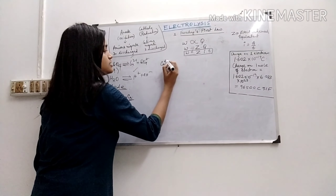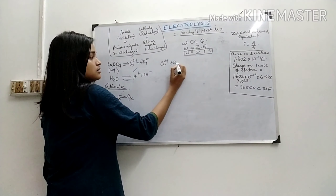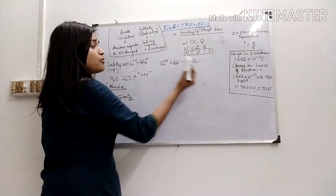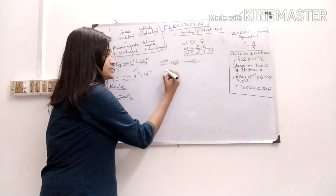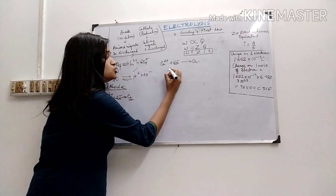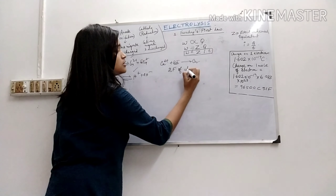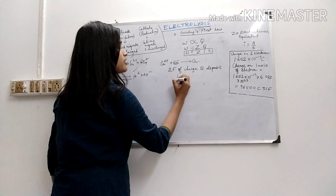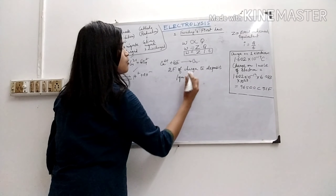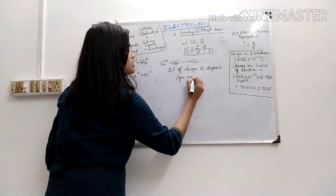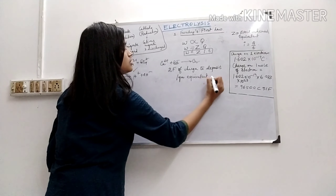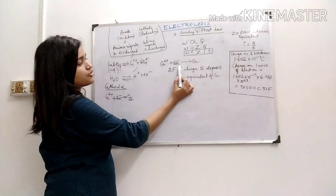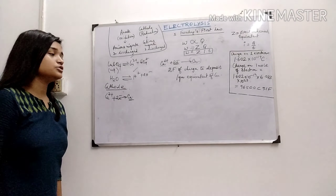If we take the copper reaction: Cu²⁺ + 2e⁻ → Cu. The copper ion takes two electrons to get deposited as copper element. That means the copper ion requires two Faradays of charge to deposit one gram equivalent of copper.